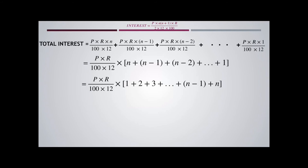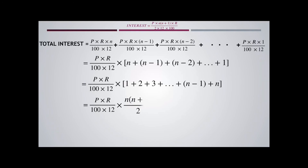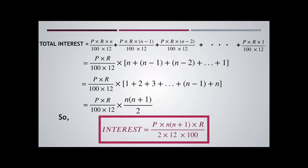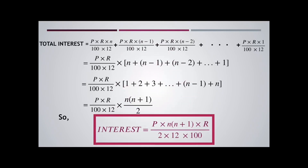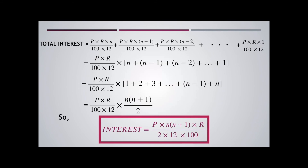This is the sum of the first N natural numbers, and it is given by the formula N × (N+1) / 2. So the final formula for finding the interest in a recurring deposit account is P × N × (N+1) × R / (2 × 12 × 100).